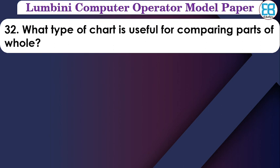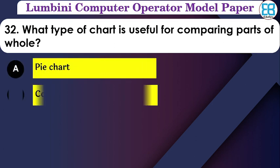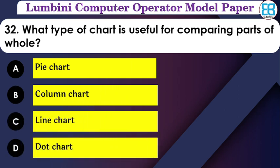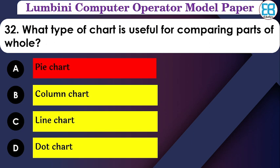What type of chart is useful for comparing parts of a whole? The options are: pie chart, column chart, line chart, dot chart. The correct option is pie chart — a pie chart shows a circle divided into different parts representing proportions of the whole.